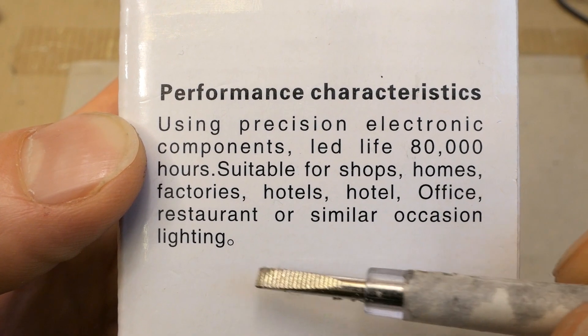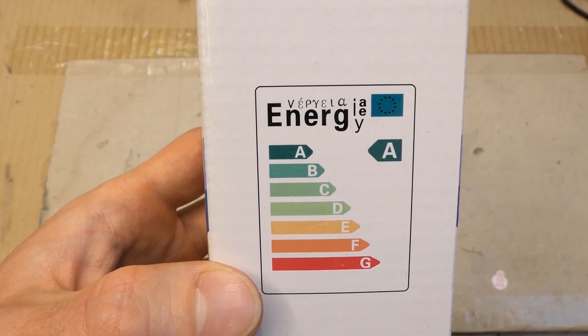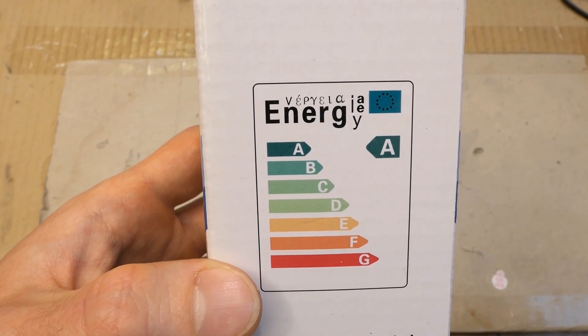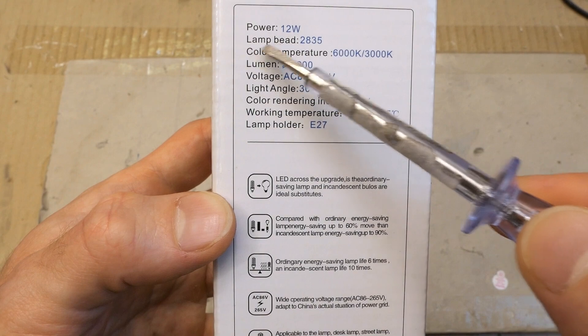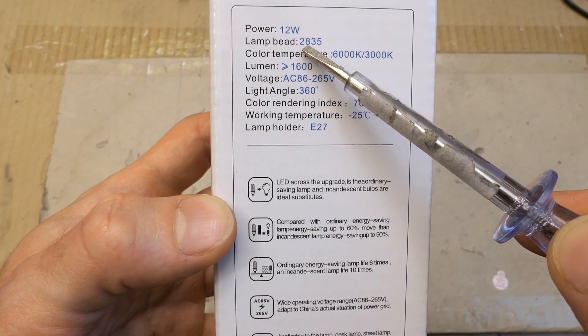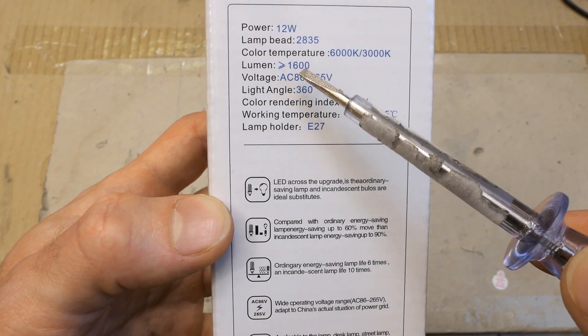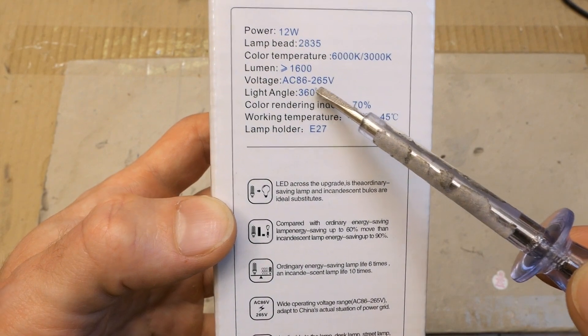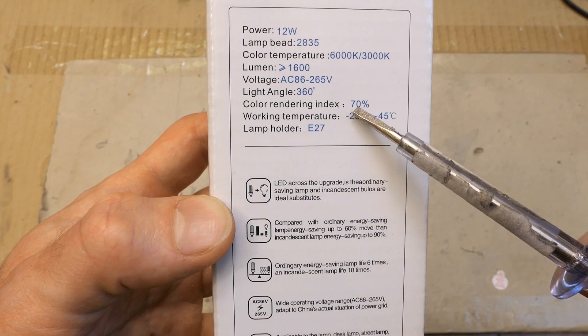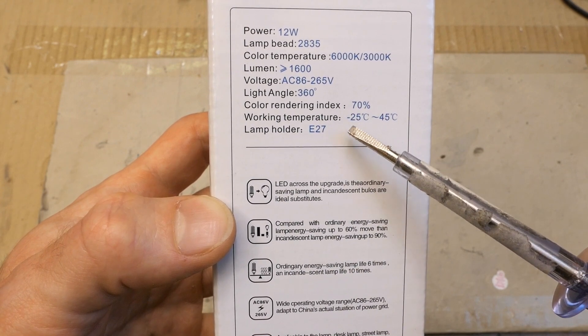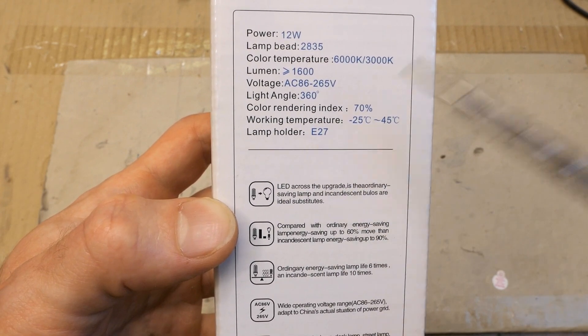A small circle instead of a dot, that's interesting. This European efficiency rating or maybe it's imitation. Power lamp beard, probably the package of SMD LEDs, color temperature, lumen, voltage, it's universal voltage range basically. Light angle, color rendering index 70%, it's not much, the temperature and the base probably.